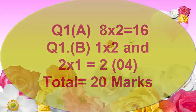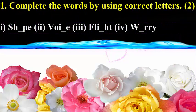Now let's see the details about the sub-questions of question number 1A. The first question will be: Complete the words by using correct letters. Here you will be given 4 different words. You have to fill these 4 words with proper letters to make a meaningful word. Each word will be for half a mark.